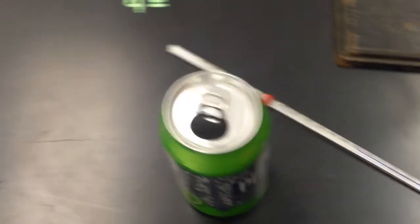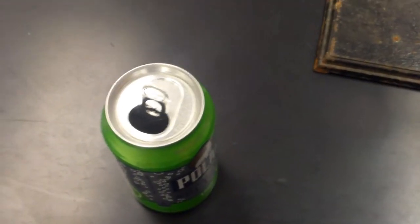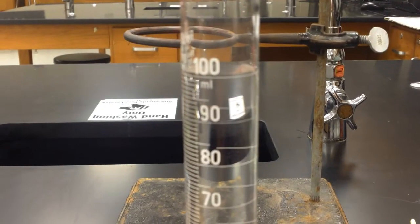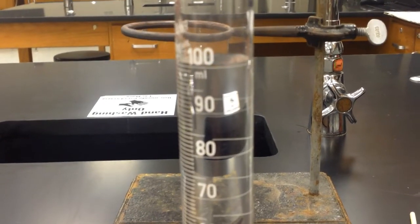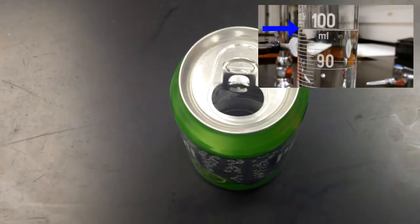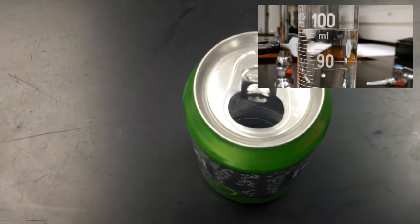The soda can is going to be used to hold the water that we're going to heat as we burn the candle. So in the graduated cylinder we have 100 milliliters of water. It's filled up to 100 milliliters and I'll take a picture of that as well. Now we're going to go ahead and pour the water from the graduated cylinder into the soda can.